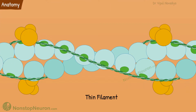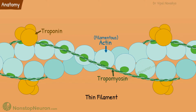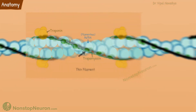Thin filaments consist of actin, tropomyosin, and troponin. Actin makes the backbone of the thin filament. Tropomyosin and troponin are regulatory actin binding proteins. Under resting conditions, the tropomyosin covers the active sites on actin molecules.